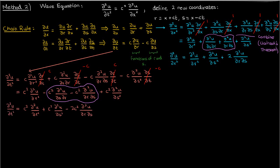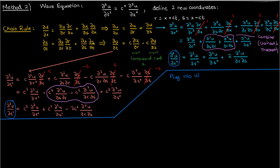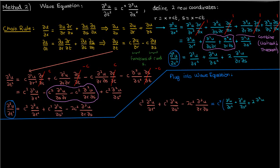Now we can plug in this expression for the second partial of u with respect to t, and this expression for the second partial of u with respect to x back into the wave equation. When we plug them back in, we end up with the following PDE in terms of the new transformed variables. We can cancel out the second partials with respect to r and s from both sides, and after moving the mixed partial to the right-hand side, we end up with a differential equation in terms of only the mixed partial derivative. The 4c squared is just a non-zero constant for the non-trivial case, and we can cancel that out.